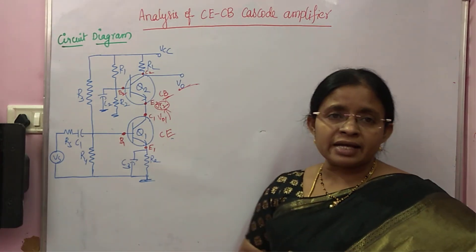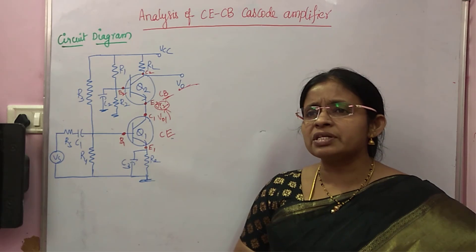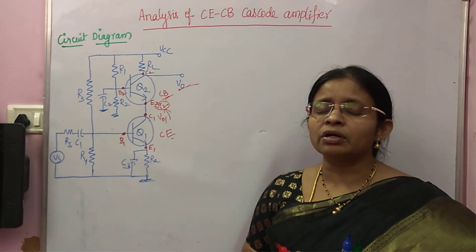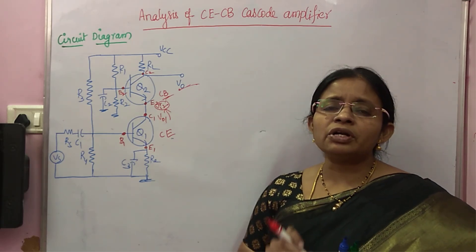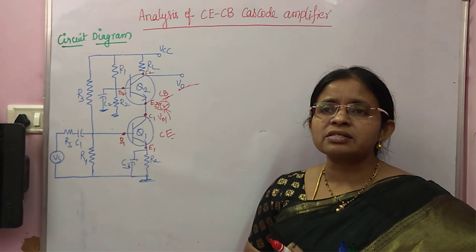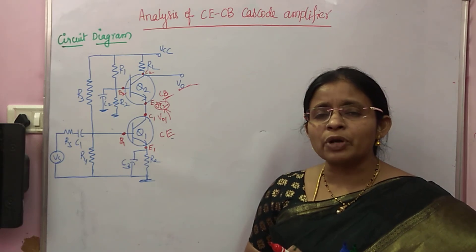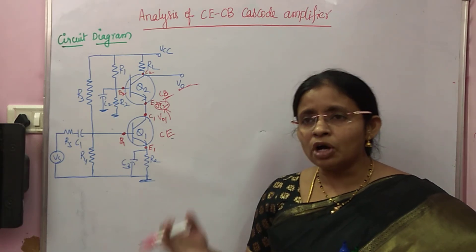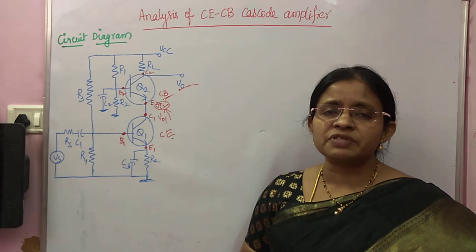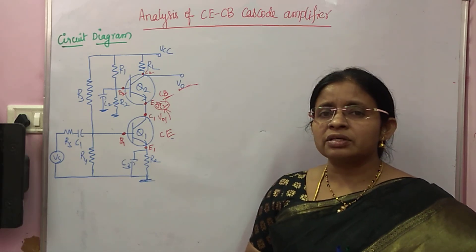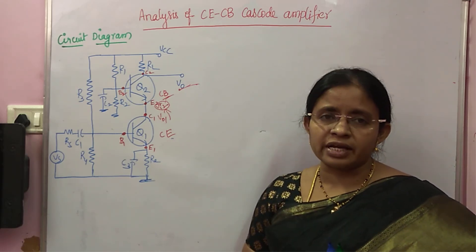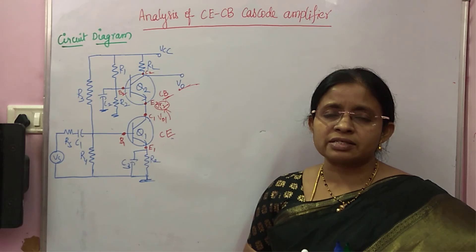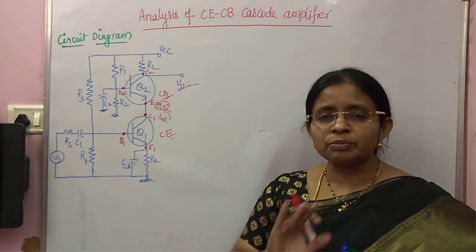Now how to analyze? The same procedure: first you have to draw the AC equivalent circuit, then replace the transistors with the approximate H parameter model, then go for the analysis of the second stage, after that analysis of the first stage, then the overall analysis. This is the procedure.